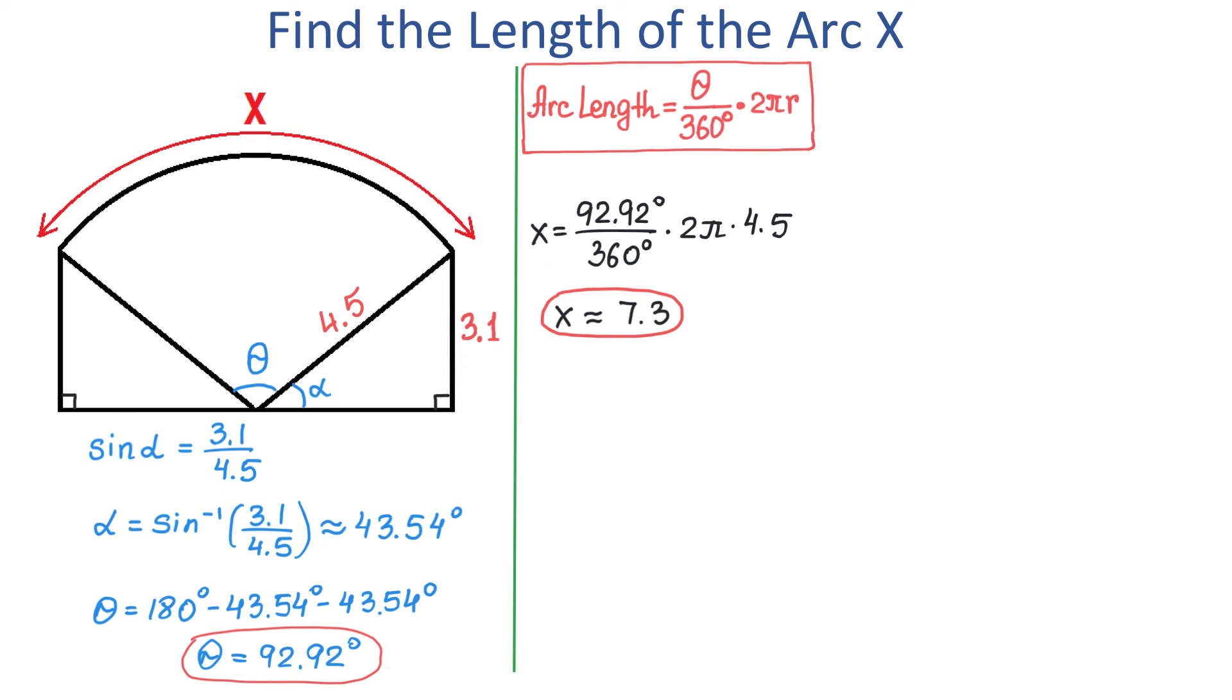Now, let's see what is the other approach to the solution. This time, we will use the formula arc length equals radius times angle theta, and angle theta has to be in radians. So, in the first step, we will take angle theta, that is 92.92 degrees, and we will convert it to radians by multiplying it by pi over 180 degrees. This is approximately 1.62 radians.